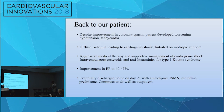Back to our patient: despite improvement in coronary spasm, she developed worsening hypotension and tachycardia, diffuse ischemia leading to cardiogenic shock, and was initiated on inotropic support. Aggressive medical therapy with intravenous corticosteroids and antihistamines for type 1 Kounis syndrome was done. Improvement in EF to 40 to 45 percent was documented. She was eventually discharged home on day 21 with amlodipine, isosorbide mononitrate, ranitidine, and prednisone, and continues to do well as an outpatient.